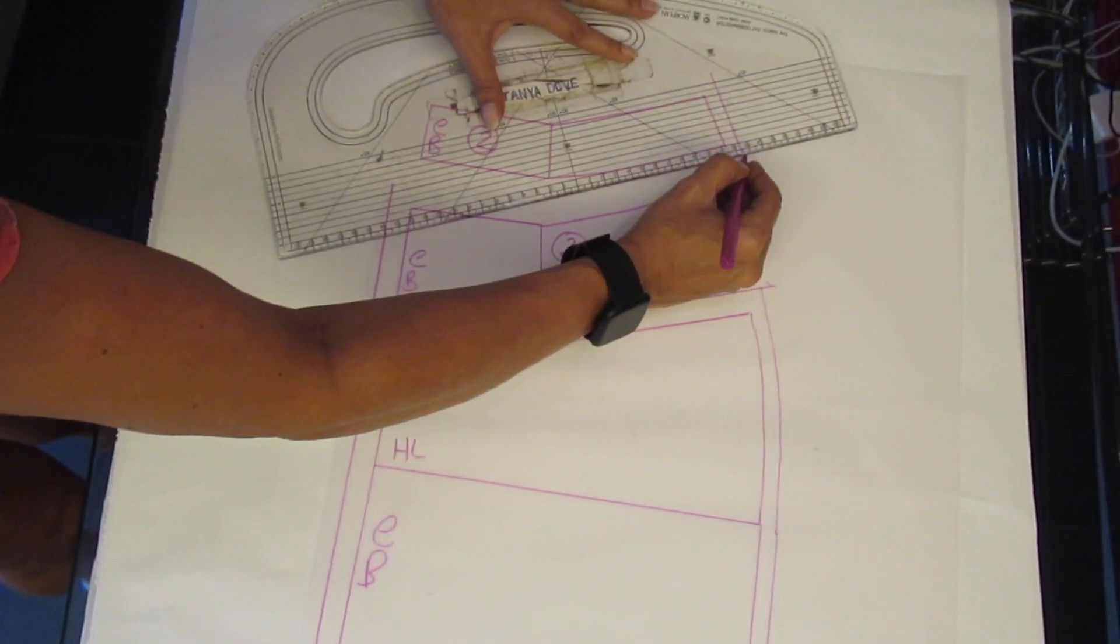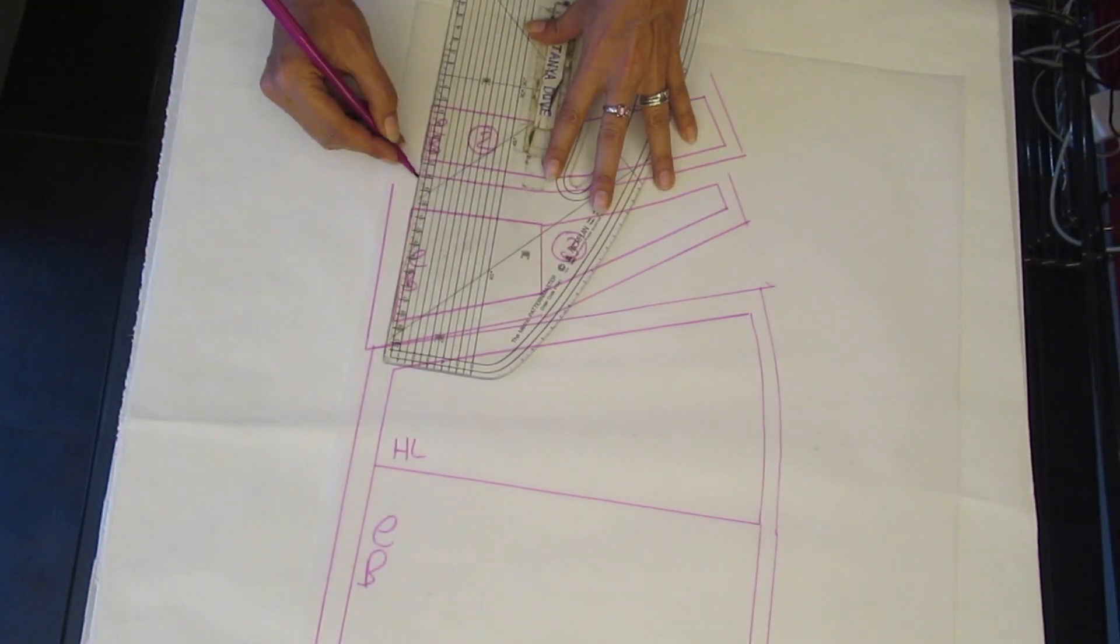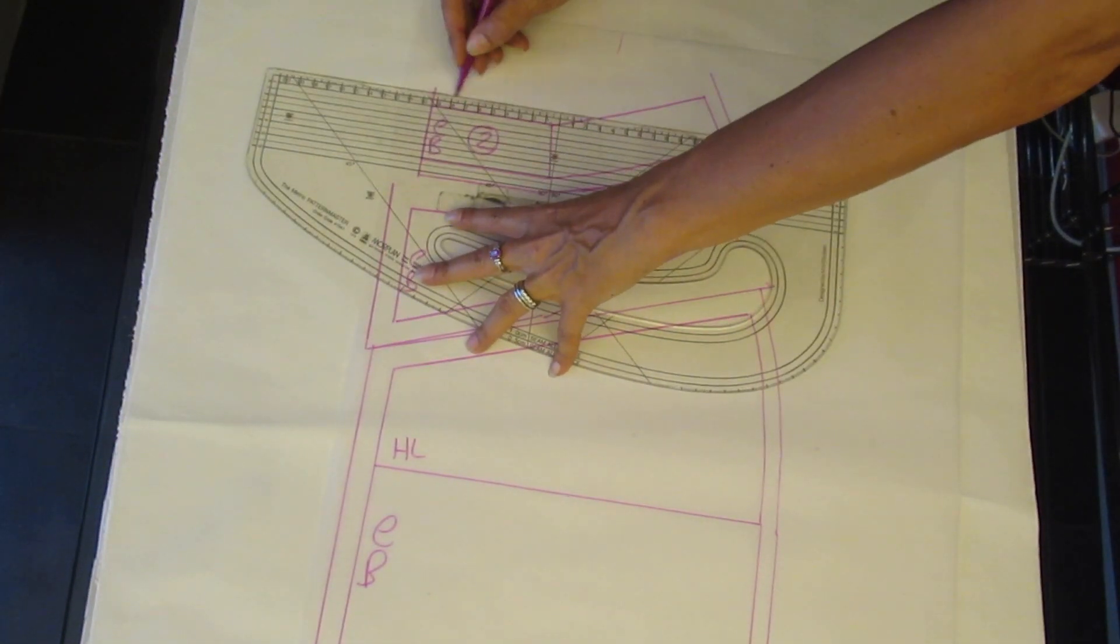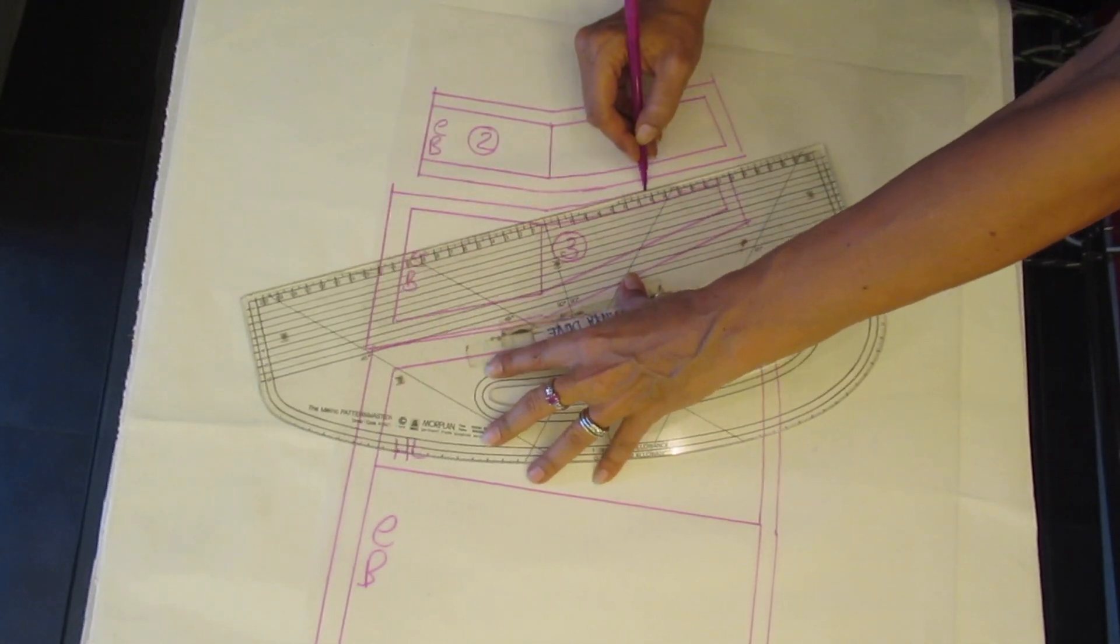The side of the yoke, the top of the yoke and the waistband is also 1cm. The centre back of the waistband is cut on the fold so it does not need seam allowance.